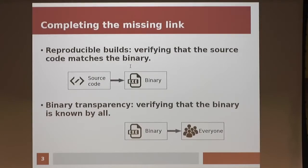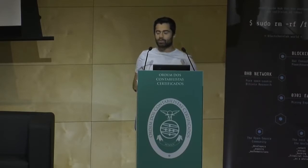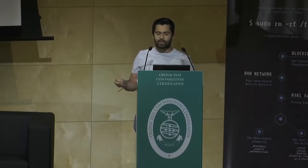Binary transparency is not to be confused with reproducible builds. The problem reproducible builds is trying to solve is: given a binary, how do you know it was compiled from specific source code? The problem binary transparency is trying to solve is: how do you know the binary you're being given is the same binary everyone else is being given? If it's not, you want assurance that binary is public so that if Apple were compelled by the FBI to give you a backdoored version, everyone would know and it couldn't be done in secret.